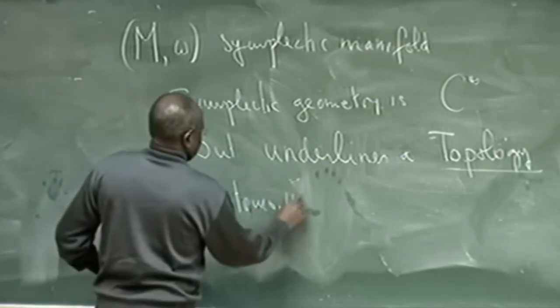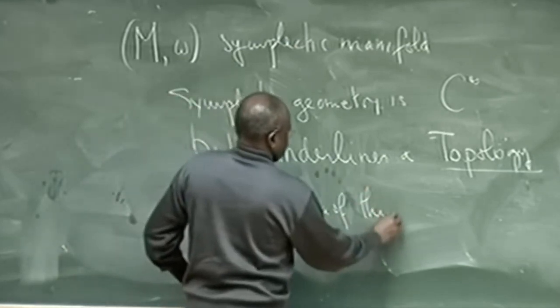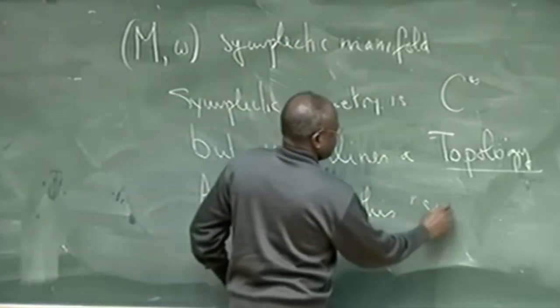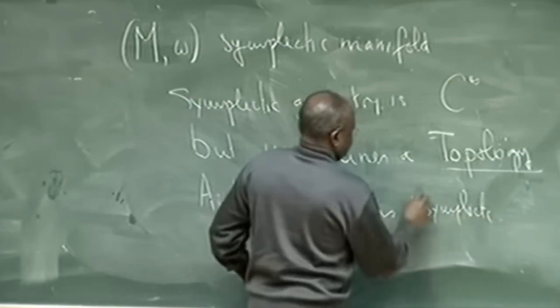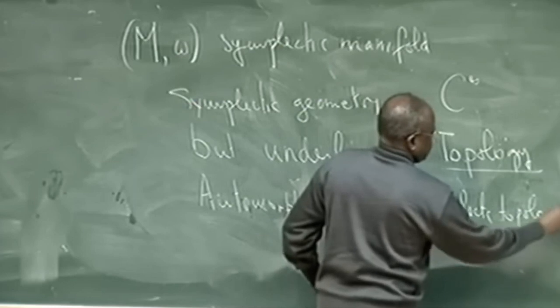Books: The Structure of Classical Diffeomorphism Groups, 1997, Published by Kluwer Academic Publishers, ISBN 0-7923-4475-8.